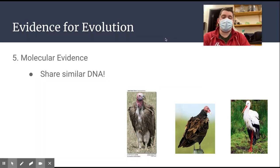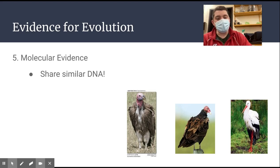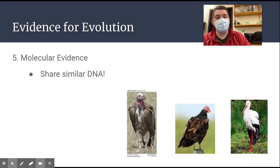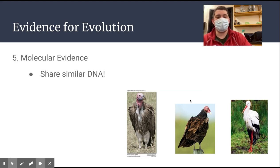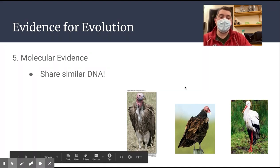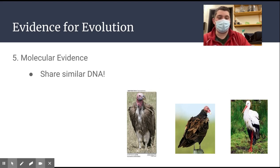Talking about DNA evidence — you can see three birds at the bottom of the page: a vulture, another type of bird, and a stork. You might think the vulture and the other bird look more related to each other. But if you look at the DNA sequence of all three, you'd actually see that the vulture is more closely related to the stork than to the other bird. It just goes to show that looks aren't everything. Sometimes you need the DNA to really see how closely related organisms are.